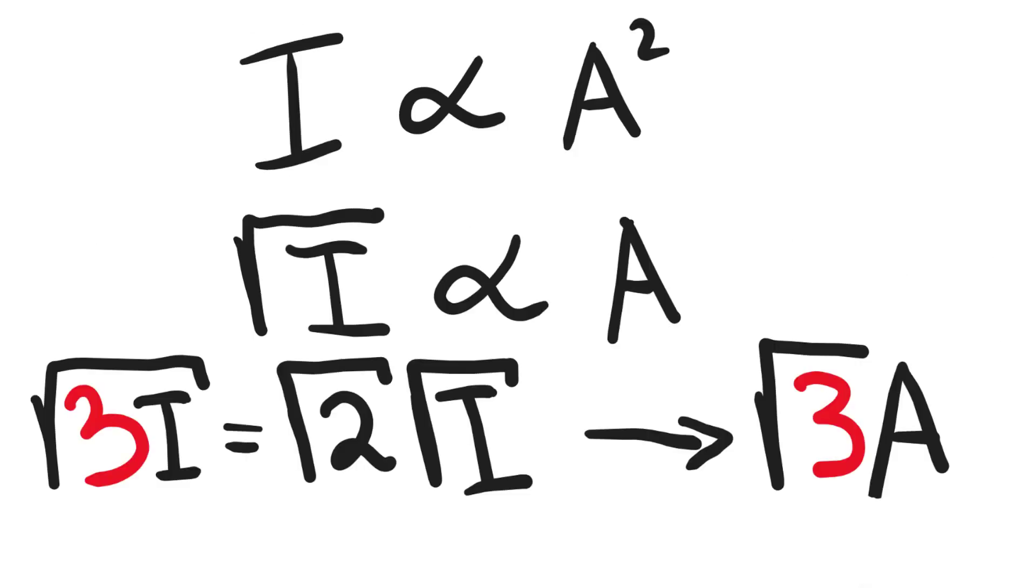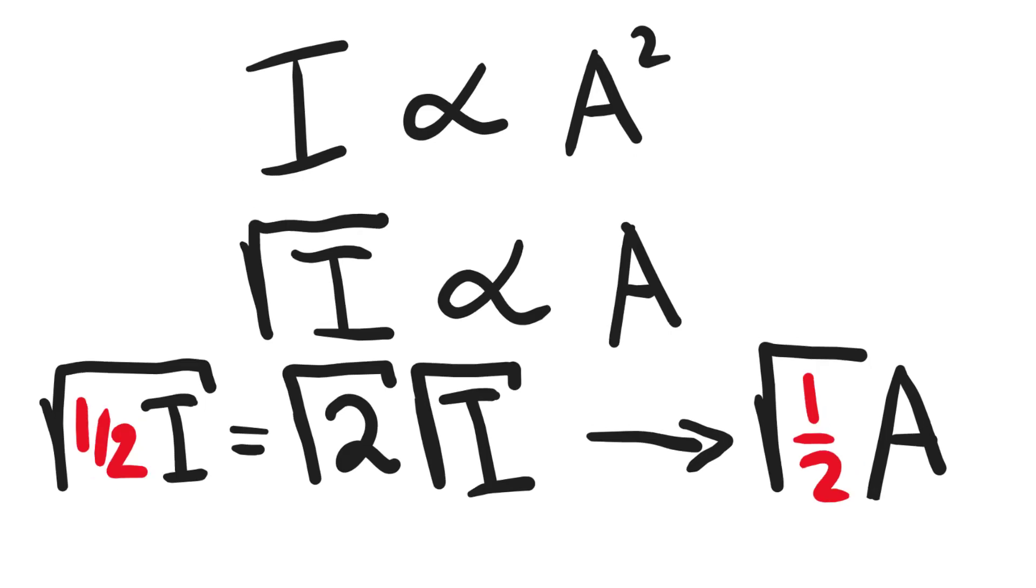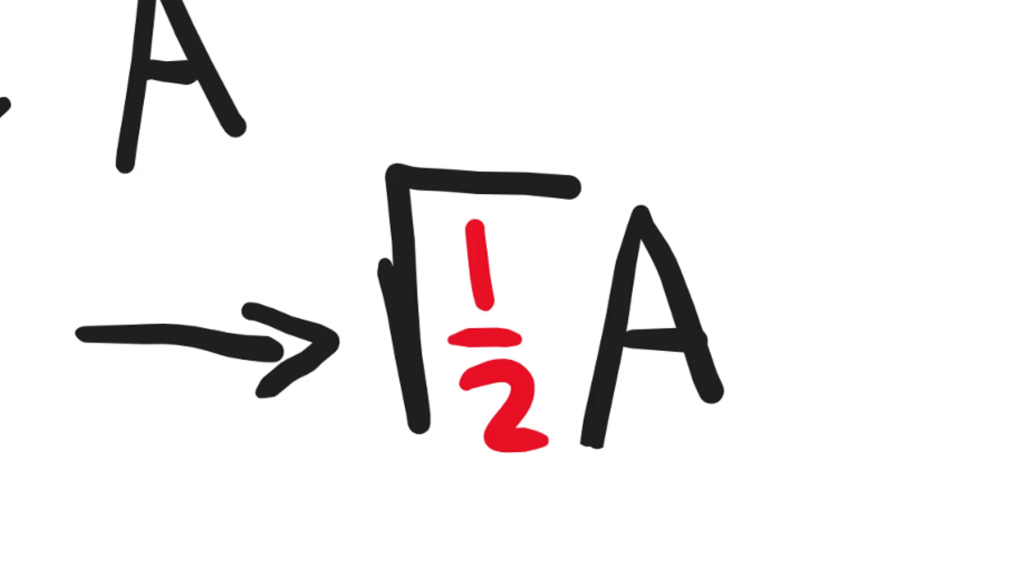This means that if I triple the intensity, the amplitude will increase by root three. If I halve the intensity, the amplitude will decrease by a factor of root of a half.